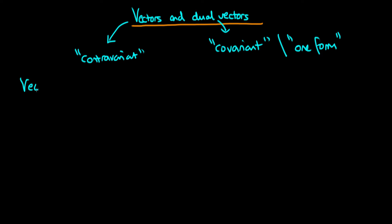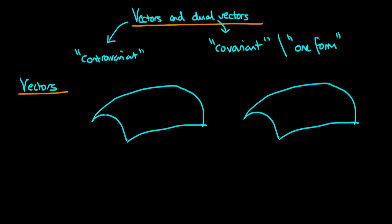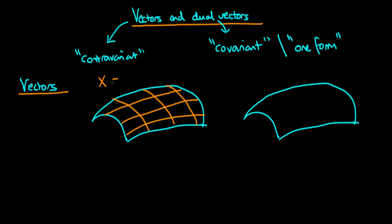Let's start off by discussing vectors. We're going to imagine that we have a surface, and on that surface we have defined a set of coordinates, or particular axes of coordinates. A given point on this particular surface is given by various coordinates — x0, x1, etc. We're imagining that this could potentially be a surface in a higher dimensional space. As shorthand, we refer to the individual coordinates as x^μ, where μ = 0, 1, 2, etc.